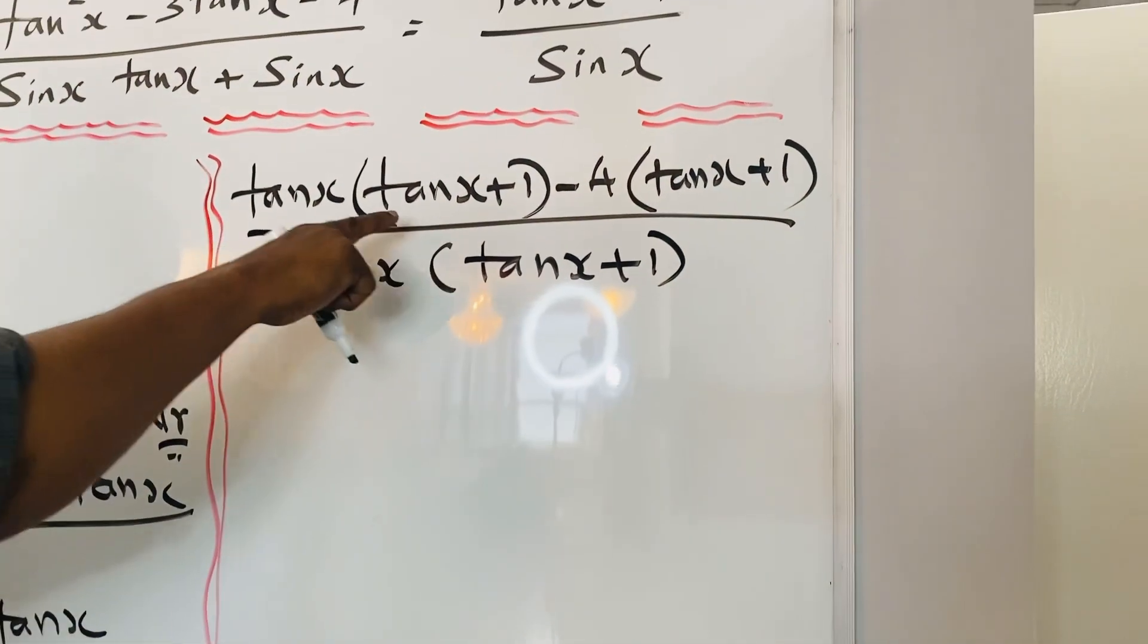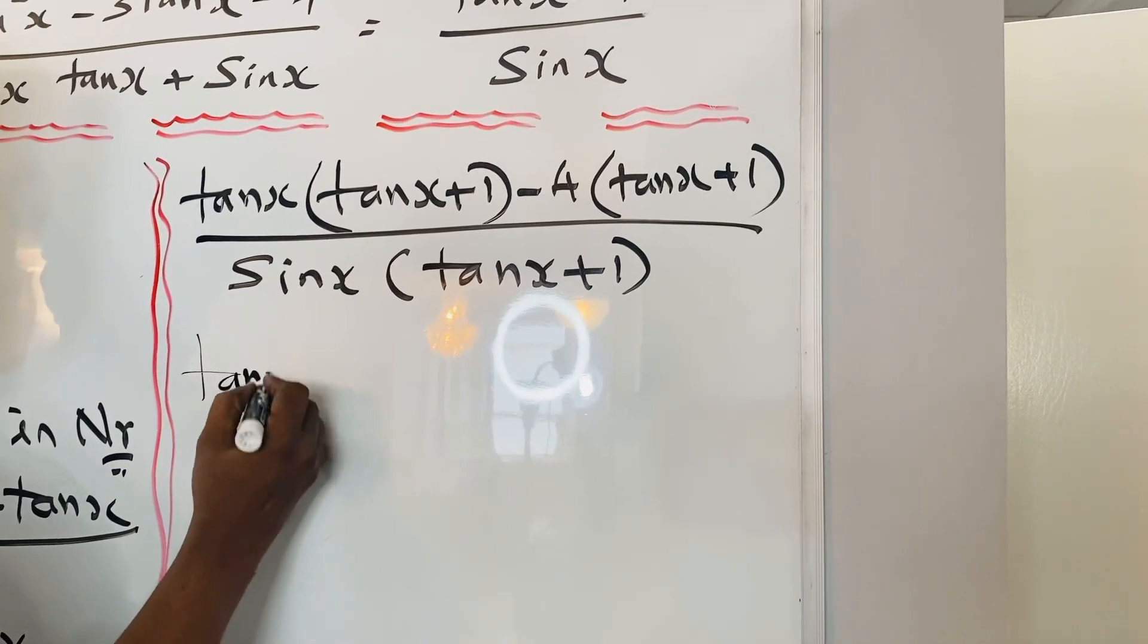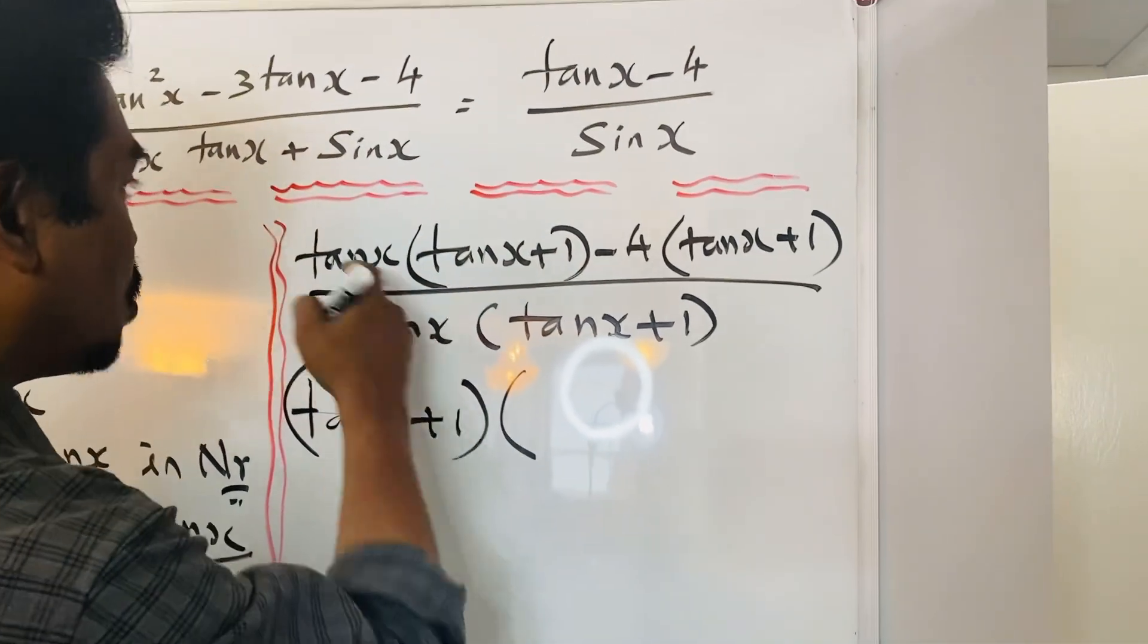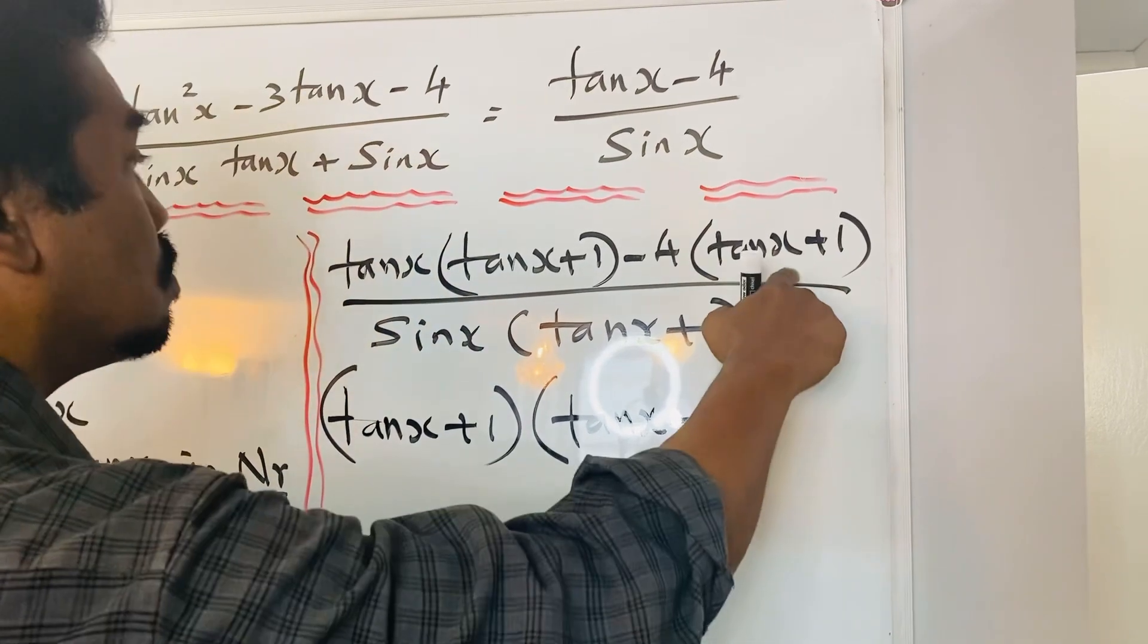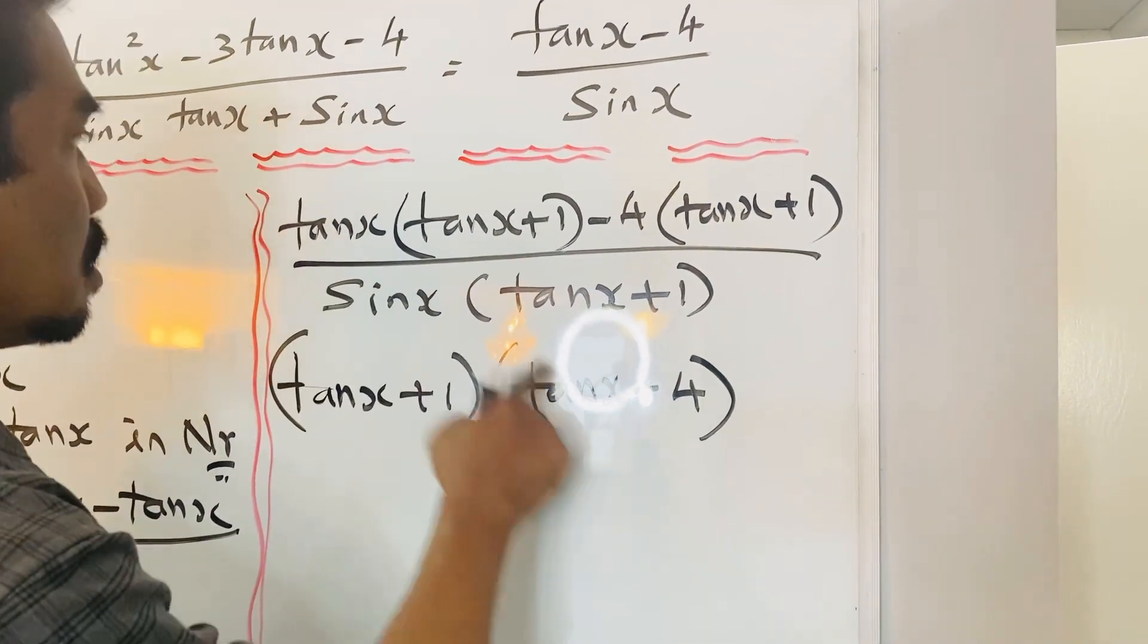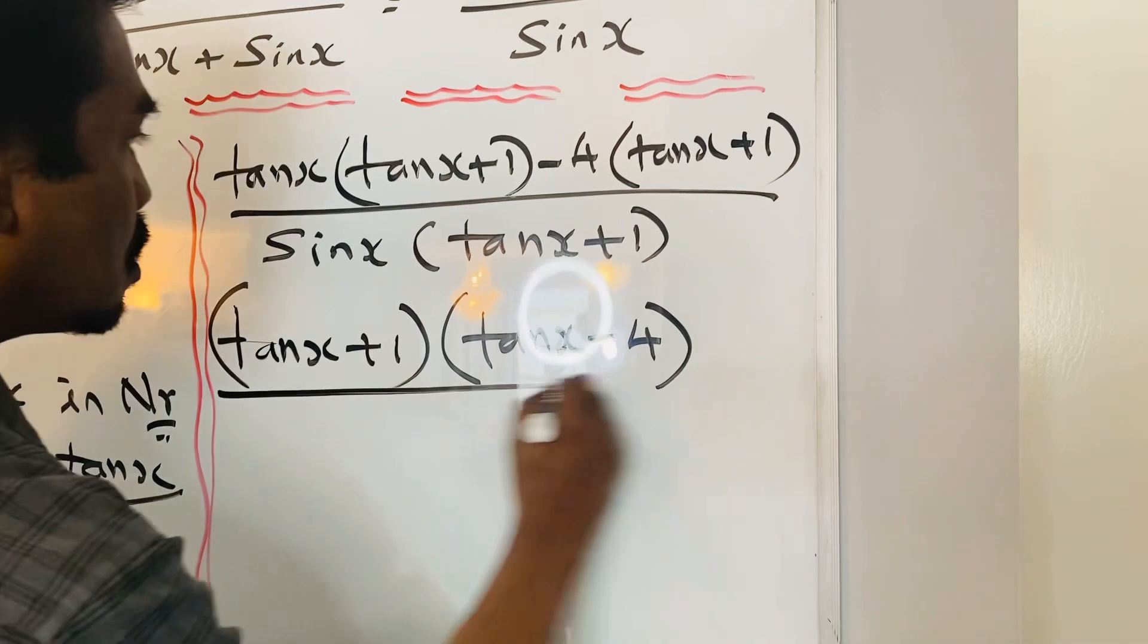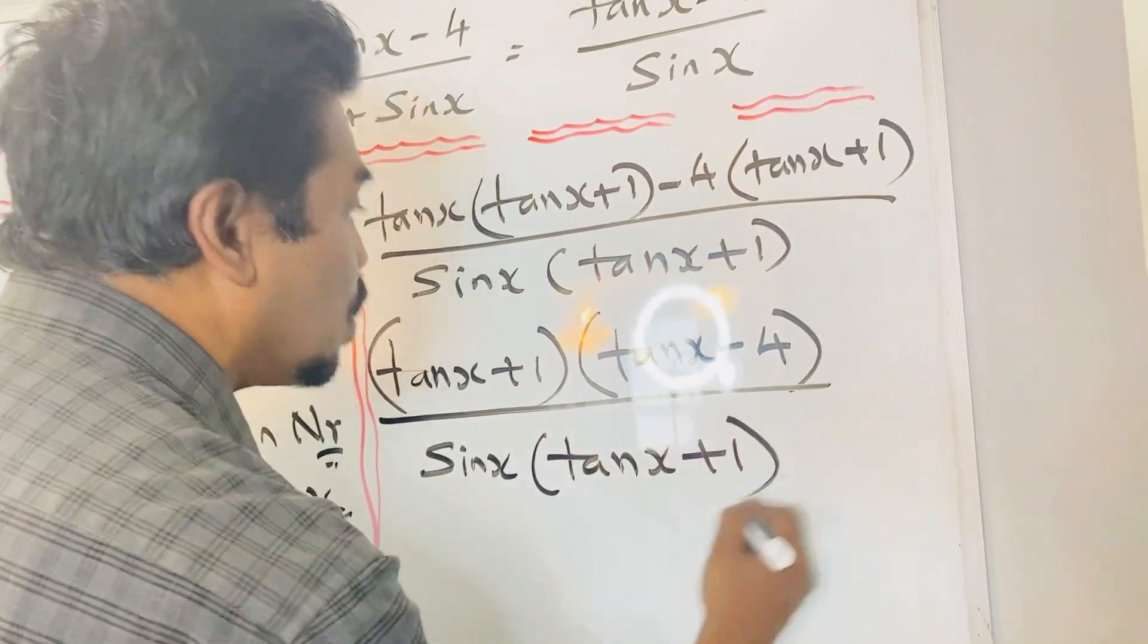Now you see in the numerator, tanx + 1, tanx + 1. I can take the tanx + 1 outside. Tanx + 1. When I take it outside, what will be inside? Tanx - 4. So tanx + 1 taken outside, tanx here, tanx. -4 is here divided by sinx(tanx + 1).